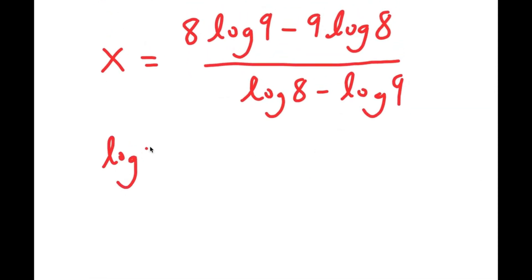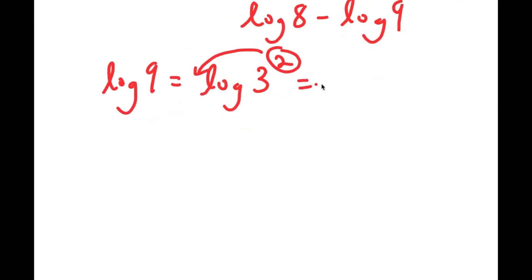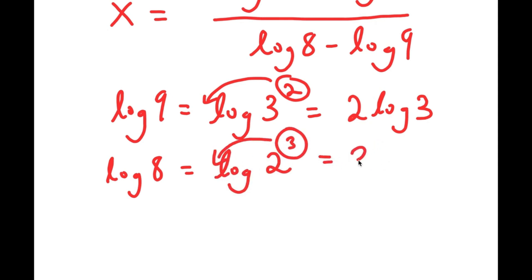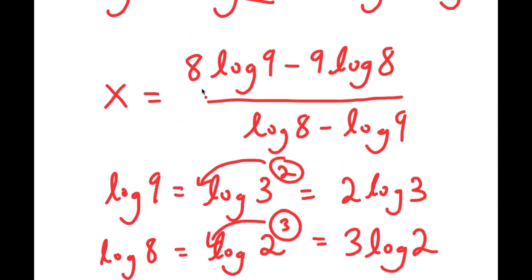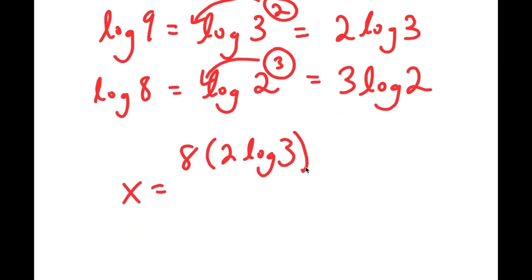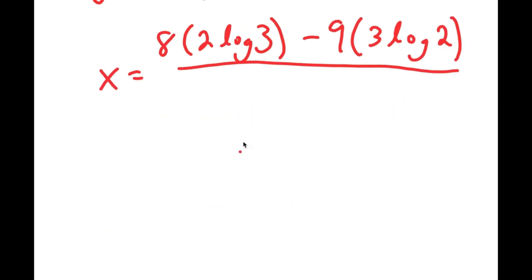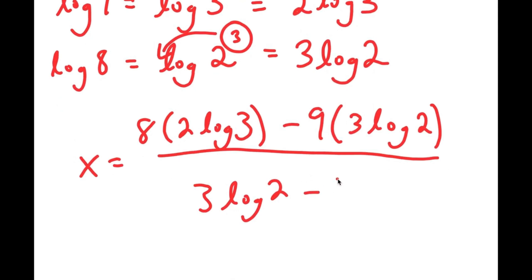Now I can simplify: log 9 equals log 3 squared, and moving the exponent to the front gives 2 times log 3. Similarly, log 8 equals log 2 cubed, which becomes 3 times log 2. Substituting these in, x equals 8 times 2 log 3 minus 9 times 3 log 2, all over 3 log 2 minus 2 log 3.